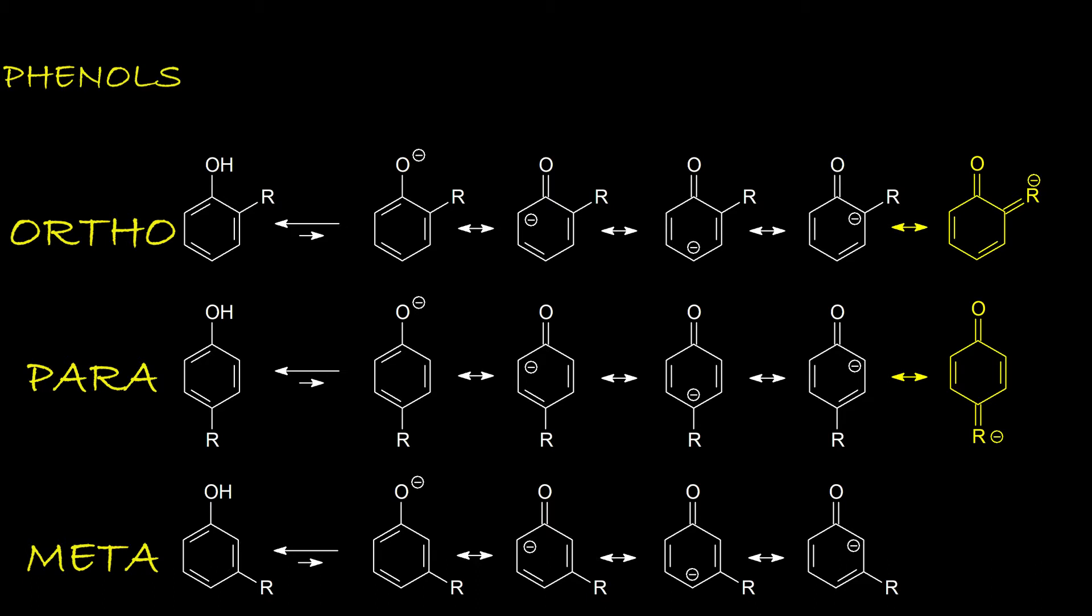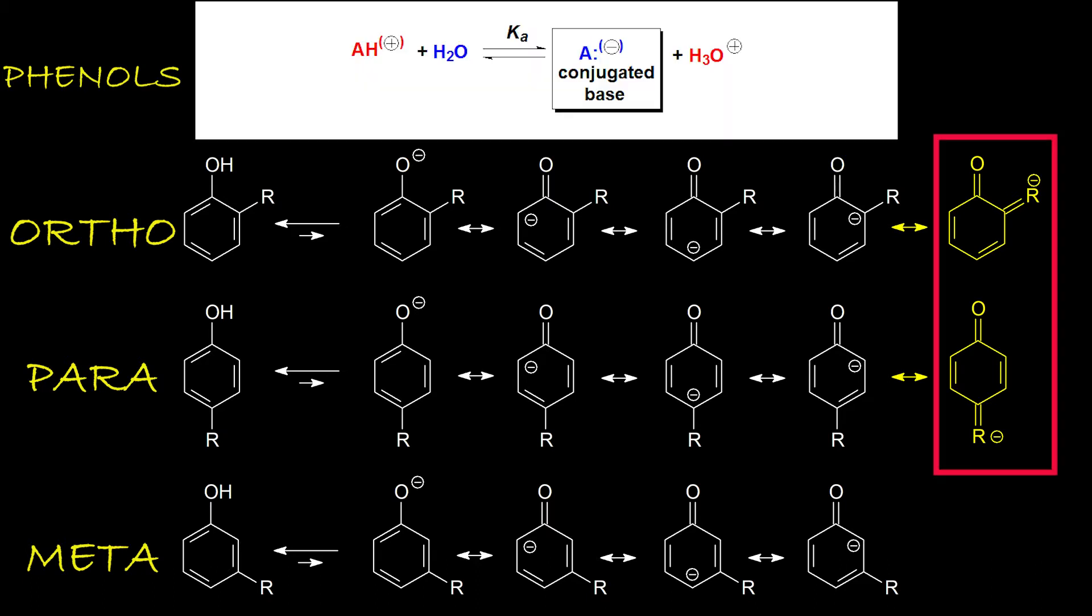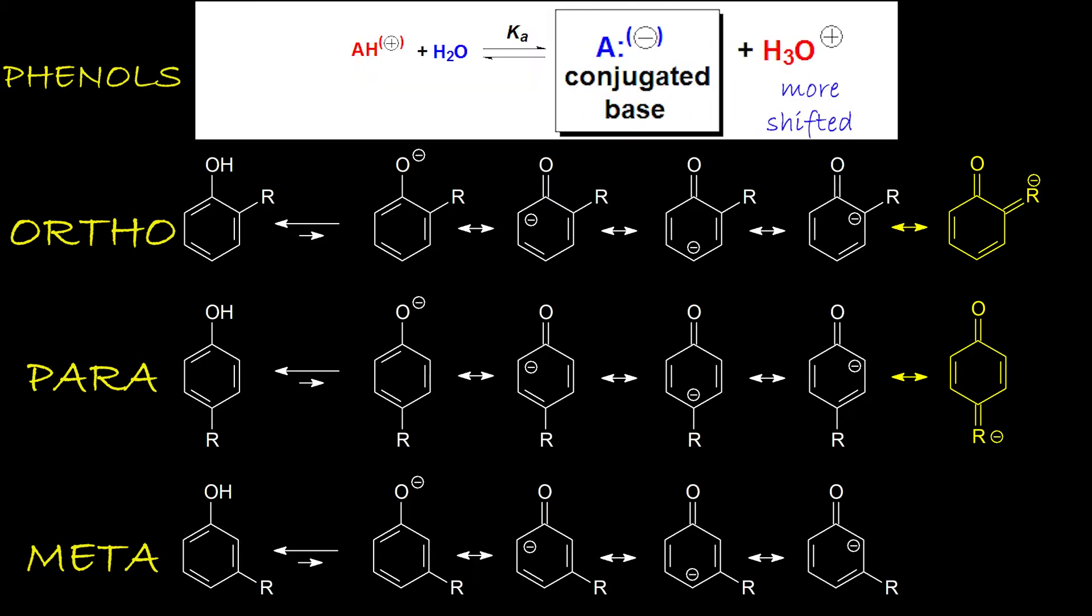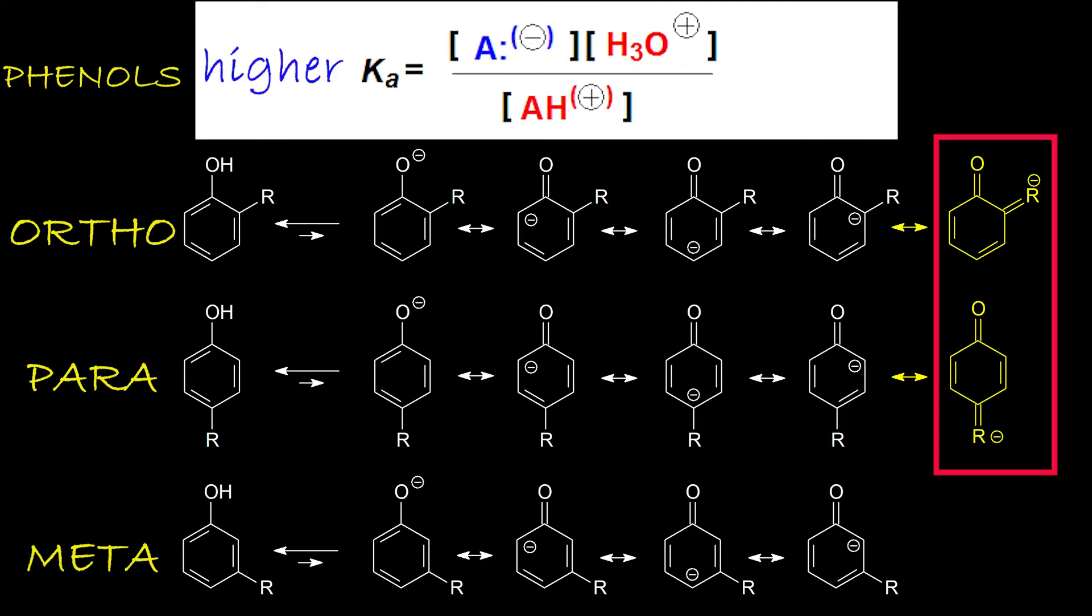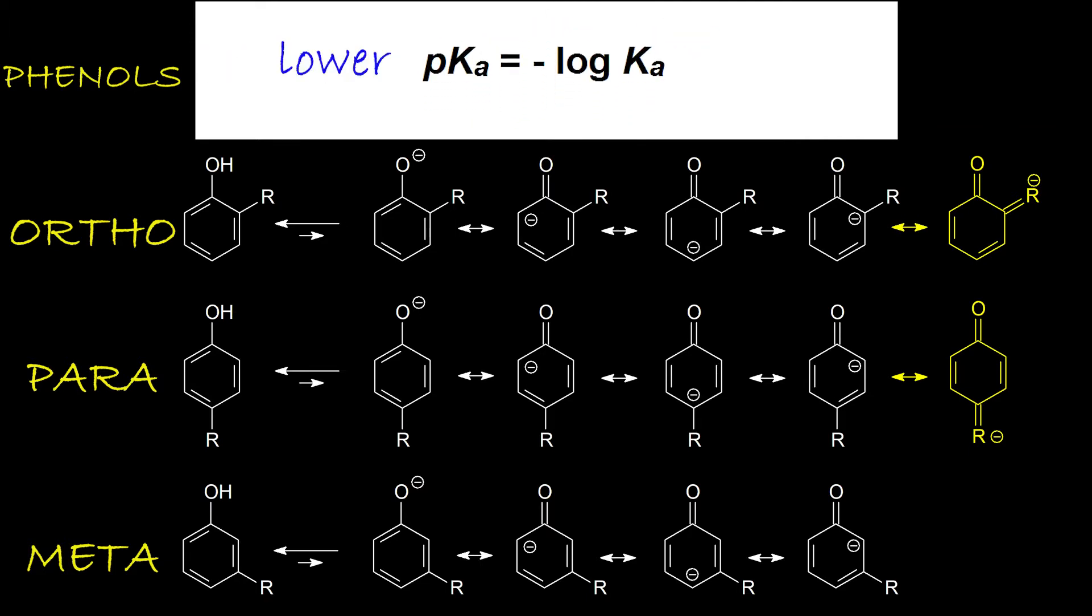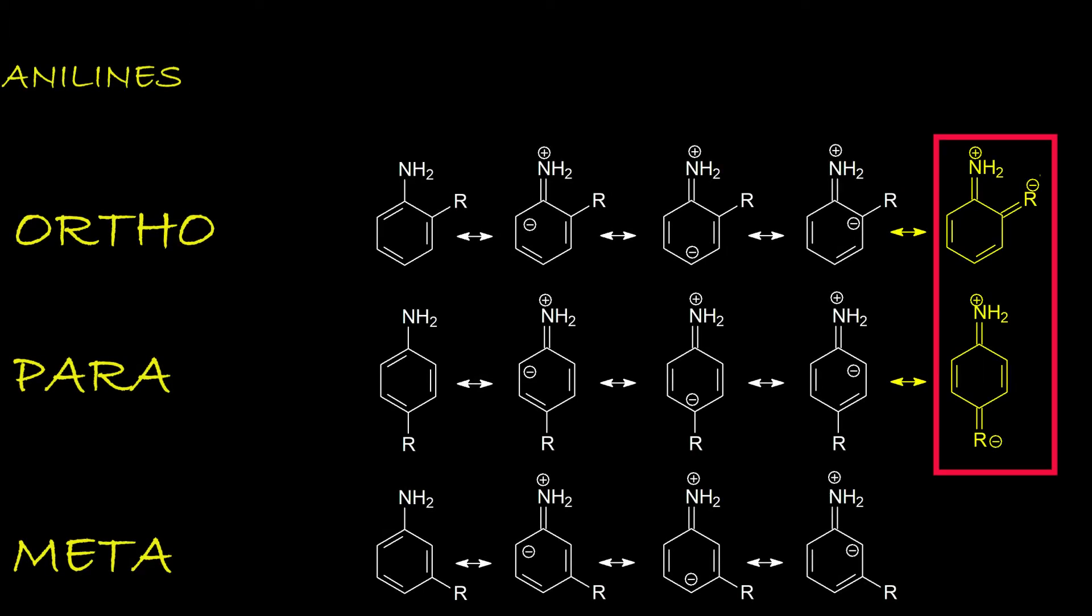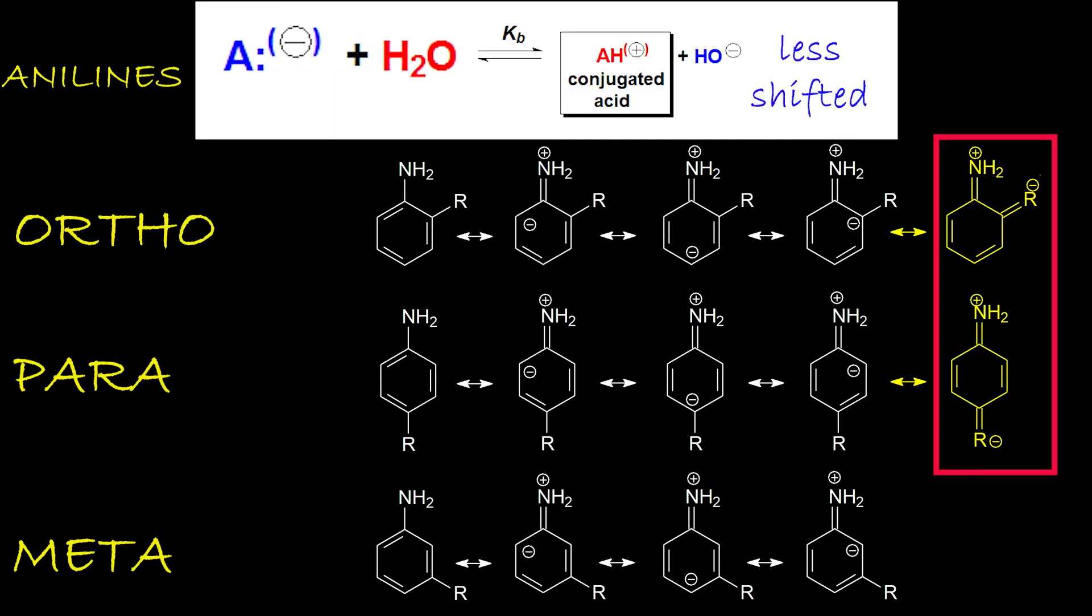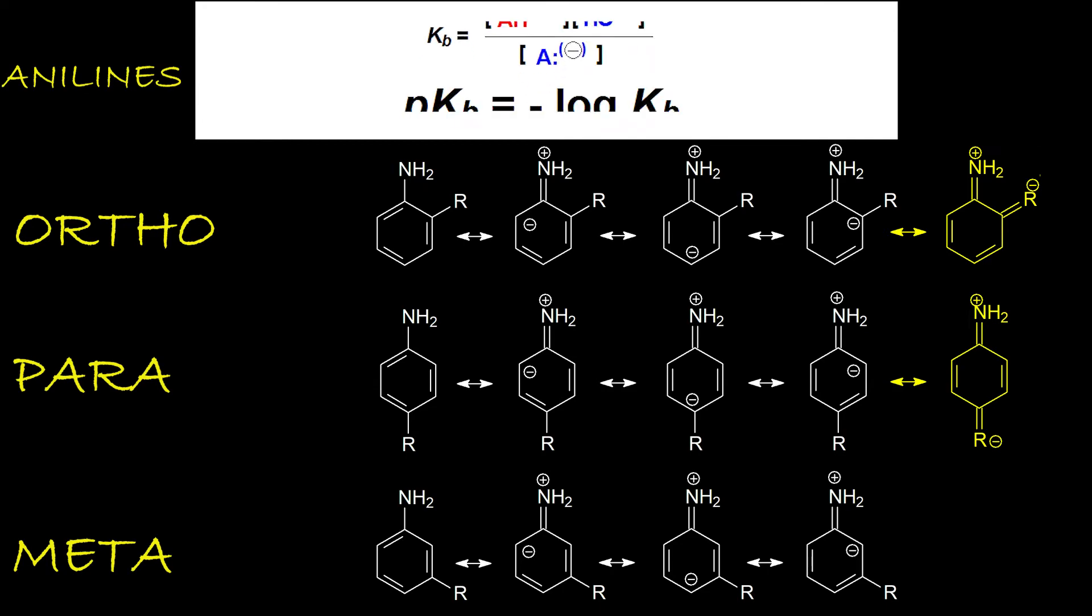The larger the delocalization of the phenolate negative charge, the higher its stability. The more shifted the equilibrium to the right-hand side, the more acidic the phenol, and the lower its pKa. On the other hand, the more delocalized the electron lone pair of aniline nitrogen, the lower its availability towards an external acid, the less shifted the equilibrium to the right, the lower aniline basicity, and the higher its pKb.